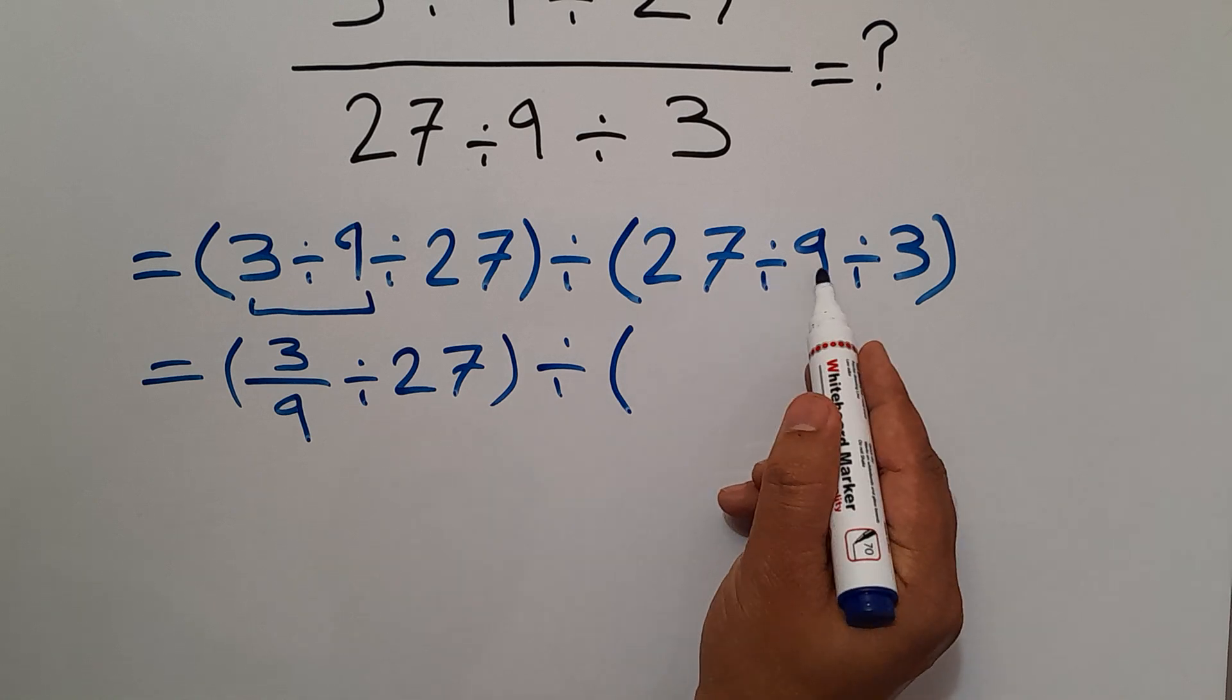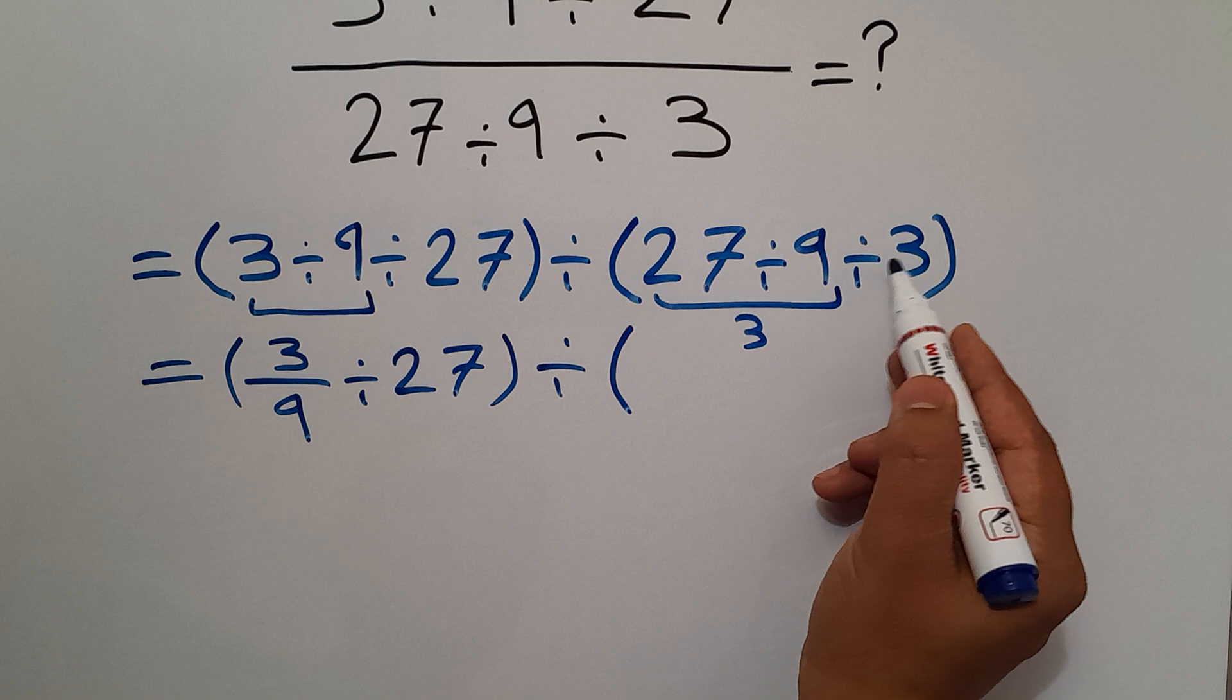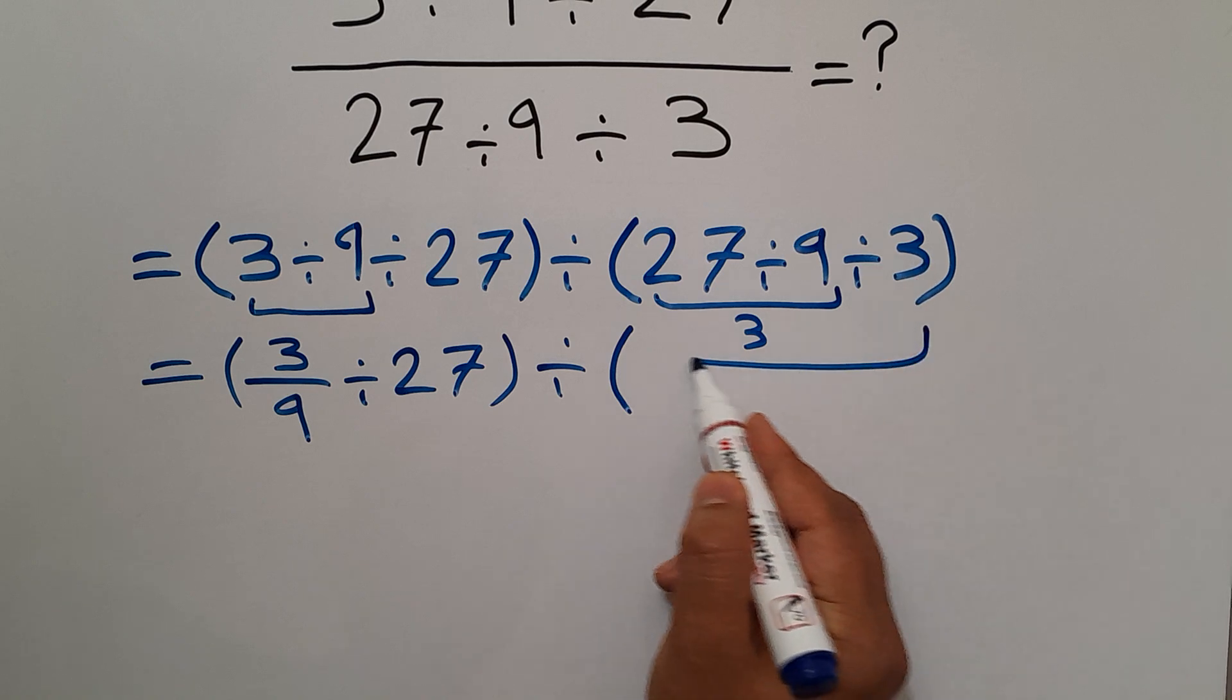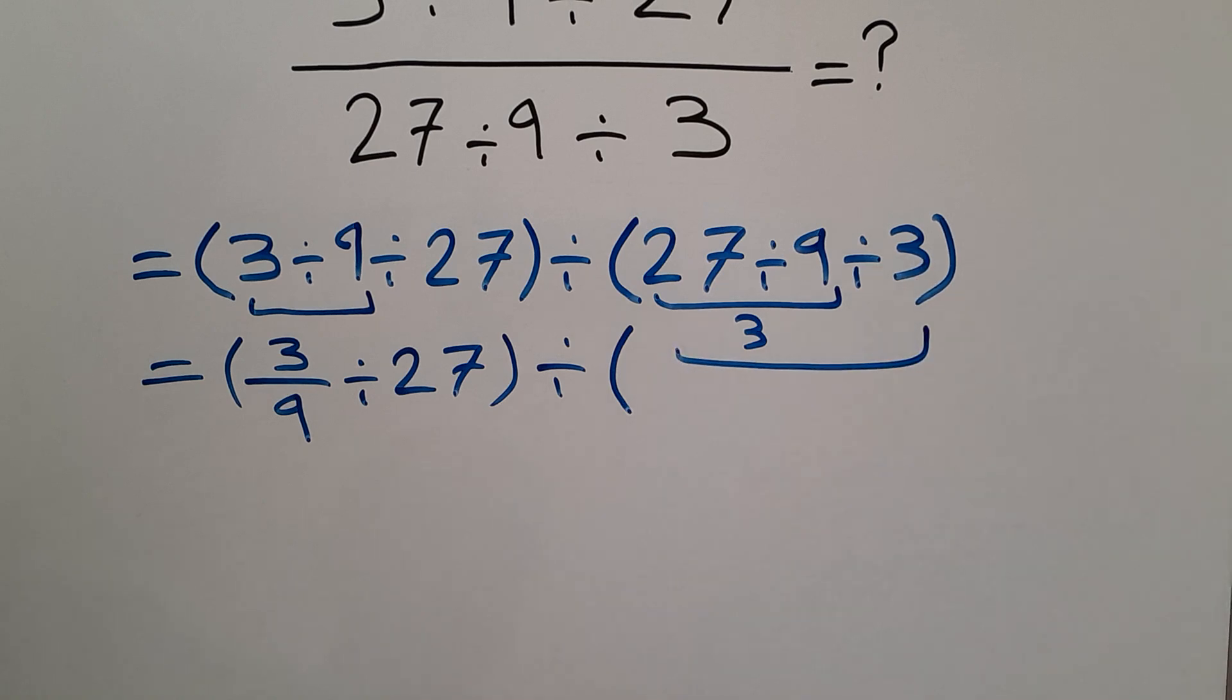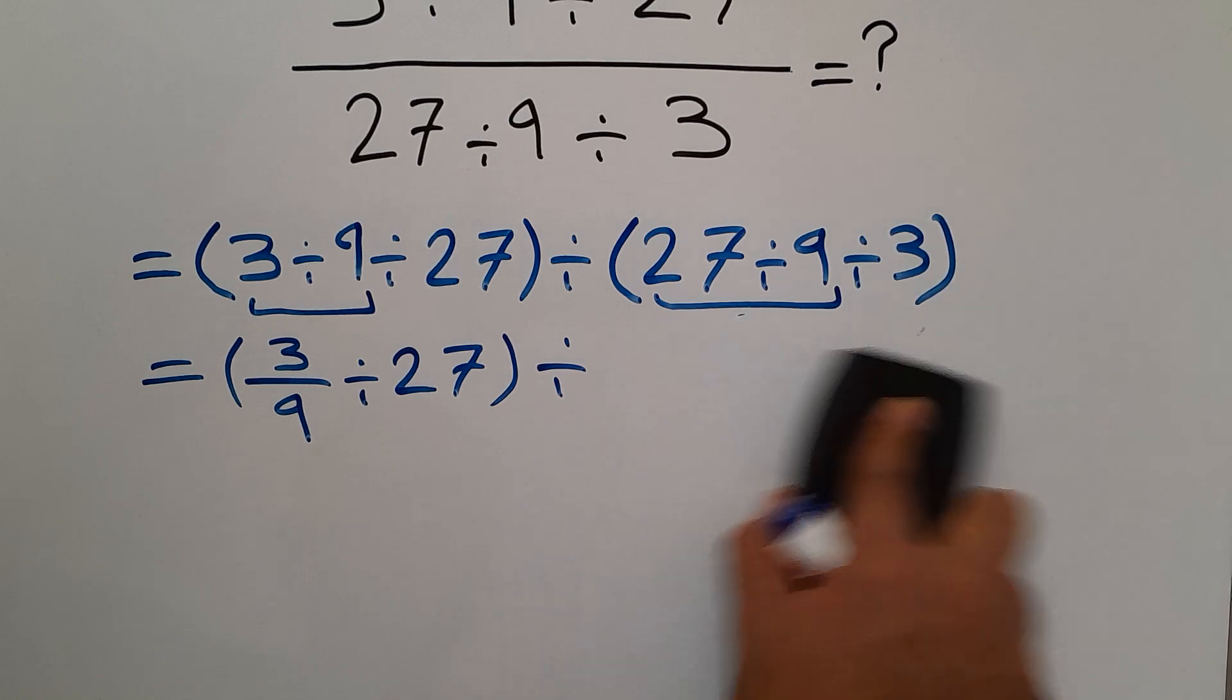27 divided by 9 gives us 3, and 3 divided by 3 equals just 1. So these parentheses equals just 1.